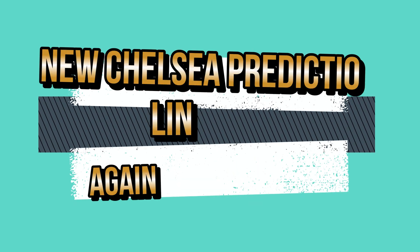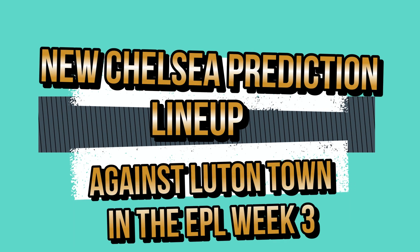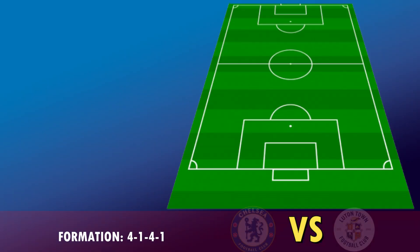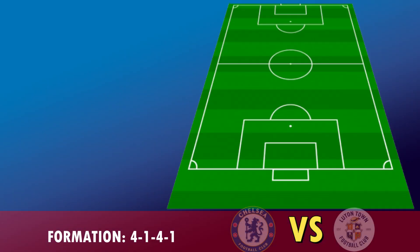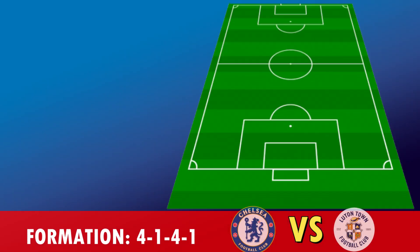New Chelsea predicted starting line-up against Luton Town in EPL Match Week 3. The Blues could be using a 4-1-4-1 formation.